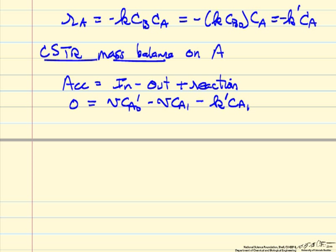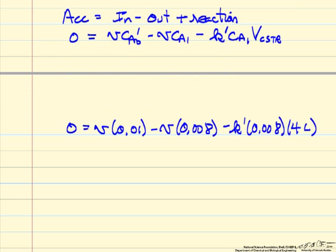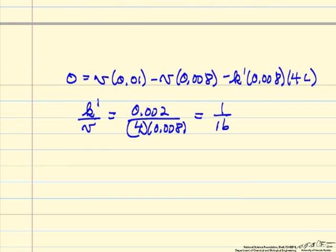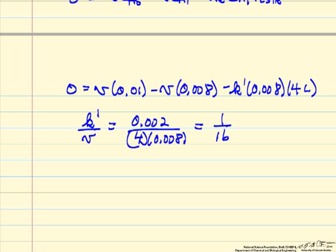So I've substituted in the values that we had just calculated for Ca0, Ca1. Note that the concentrations are moles per liter, and this is in liters. And so what we can solve for is K prime over the volumetric flow rate is 1 over 16. We don't know the volumetric flow rate or K prime.